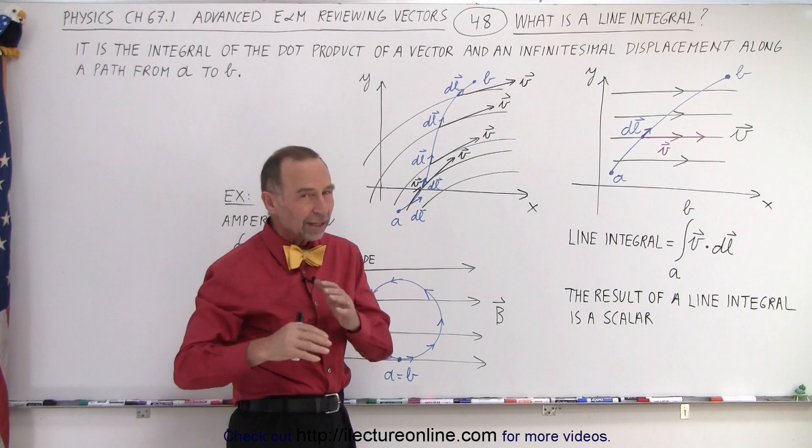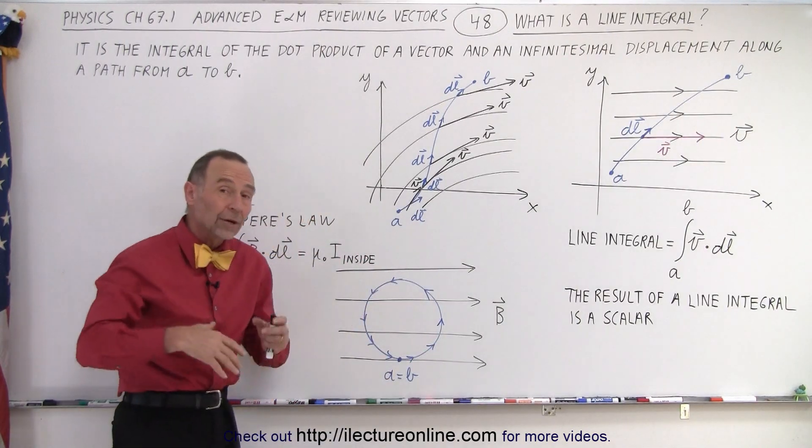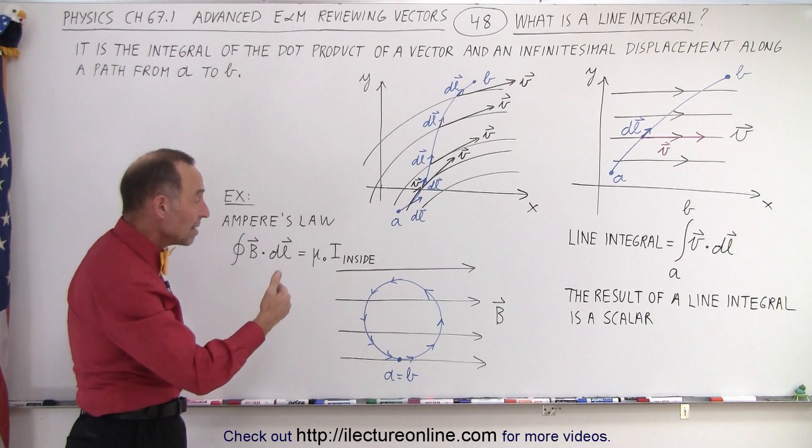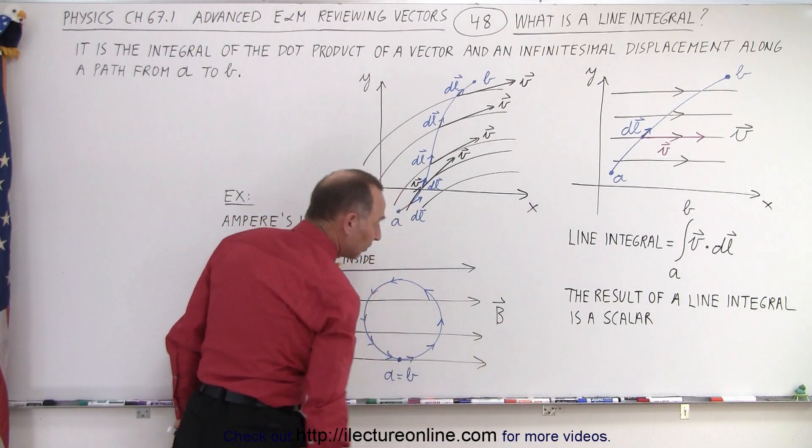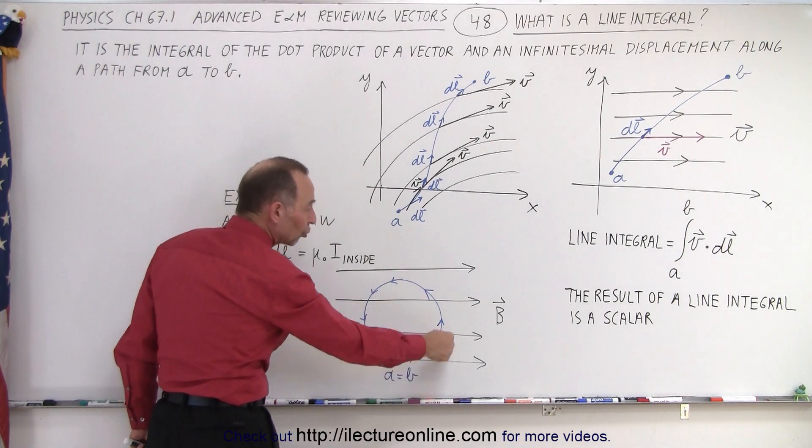Now we have all kinds of examples of that. One example that we'll see later in the course is the magnitude of the magnetic field, we call the B field, the magnetic field, and then we travel around in a circle.